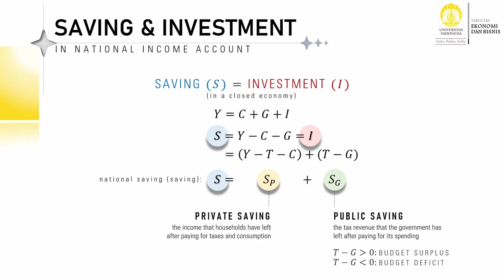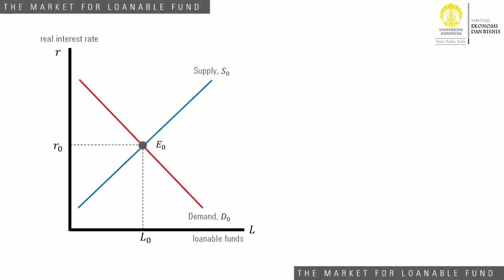After identifying saving and investment in the national income account, I'm going to explain how the financial market works to coordinate an economy's saving and investment. To keep things simple, we assume that the economy has only one financial market called the market for loanable funds.